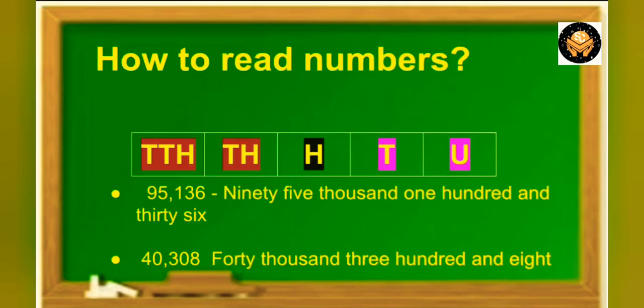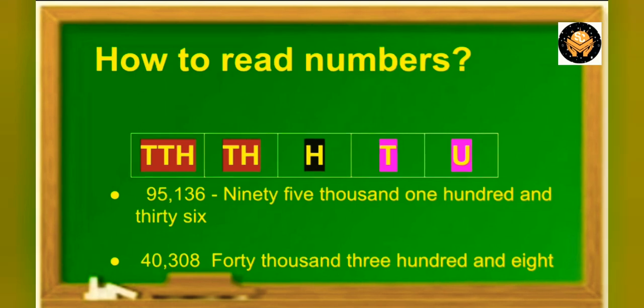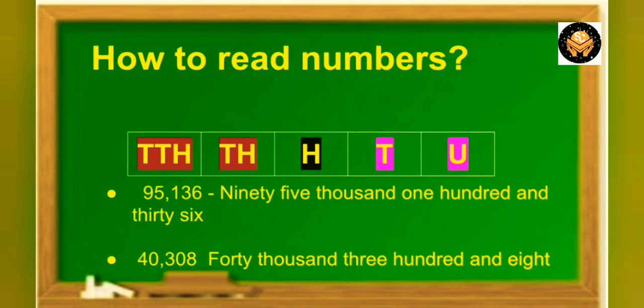Now let's see how to read numbers. Just as we read the 10s and units place together, we read 10,000s and thousands together. So we read 95,136 as ninety-five thousand one hundred thirty-six. Similarly, we read 40,308 as forty thousand three hundred and eight.